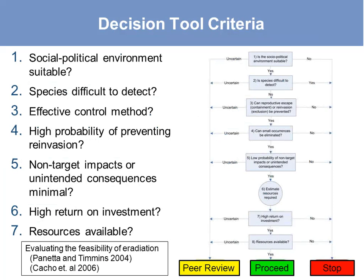The second set of decision trees includes one for each of the three control categories. The containment decision tree has seven criteria, identified and selected based on publications evaluating the feasibility of eradication, with a particularly helpful paper by Panetta and Timmons in 2004. There are three possible outcomes from the decision tree: proceed, stop, or peer review.